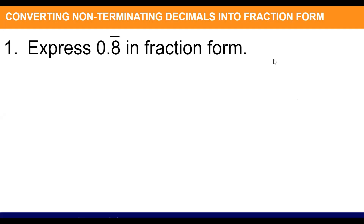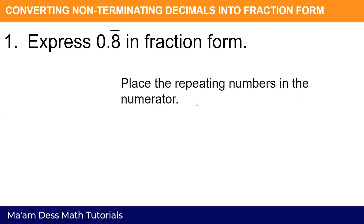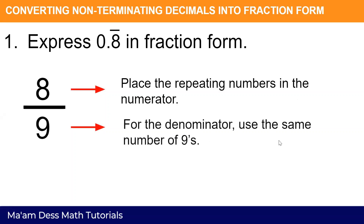Converting non-terminating repeating decimals into fraction form. Express 0.8 repeating in fraction form. Place the repeating number in the numerator. For the denominator, use the same number of nines — since there is one decimal place, subtract one from ten to get nine. So 0.8 repeating equals eight over nine.